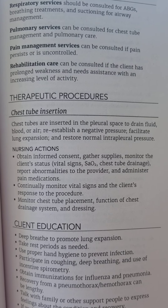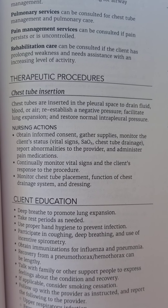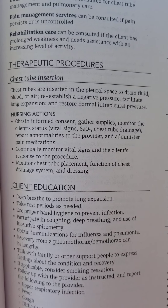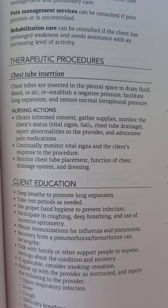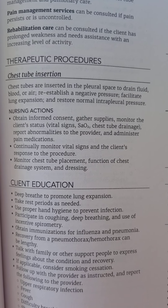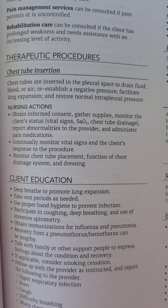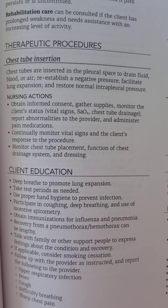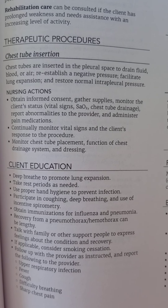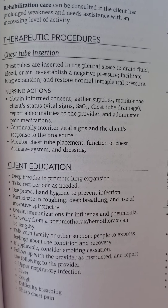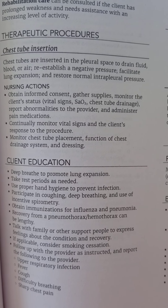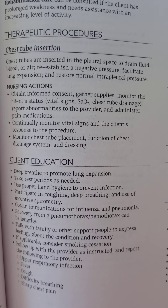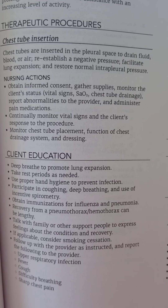For therapeutic procedures, there could be chest tube insertion. Chest tubes are inserted in the pleural space to drain fluid, blood, or air, to reestablish negative pressure, facilitate lung expansion, and restore normal intrapleural pressure. Nursing actions are to obtain informed consent, gather supplies, monitor the client's status — such as vital signs, SaO2, and chest tube drainage — report abnormalities to the provider, administer pain medications, and continually monitor vital signs, chest tube placement, function of the chest drainage system, and dressing.